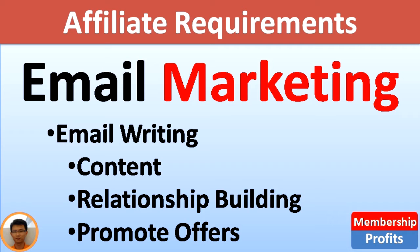Now how do you do that? In this industry, top affiliates do this by writing emails. Every day they send emails to their target audience. There are three types of emails. Content emails are emails where the affiliate teaches about a particular subject. For example, I will write an email about the top 10 headlines that get the most likes on Facebook. My audience will love that information.